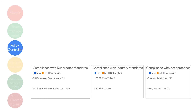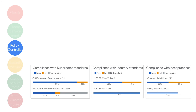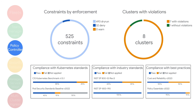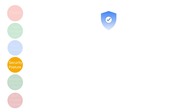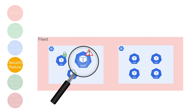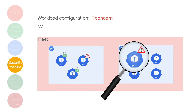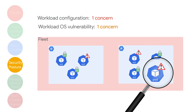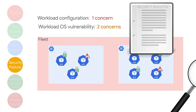With Policy Controller, you're able to meet compliance requirements for your clusters, ensure consistent policy enforcement throughout the organization, and get an overview of any compliance violations. Your security posture is improved, as common security concerns are automatically detected and reported across multiple clusters and workloads. This feature also scans containers for known vulnerabilities and surfaces relevant security bulletins that affect your workloads.